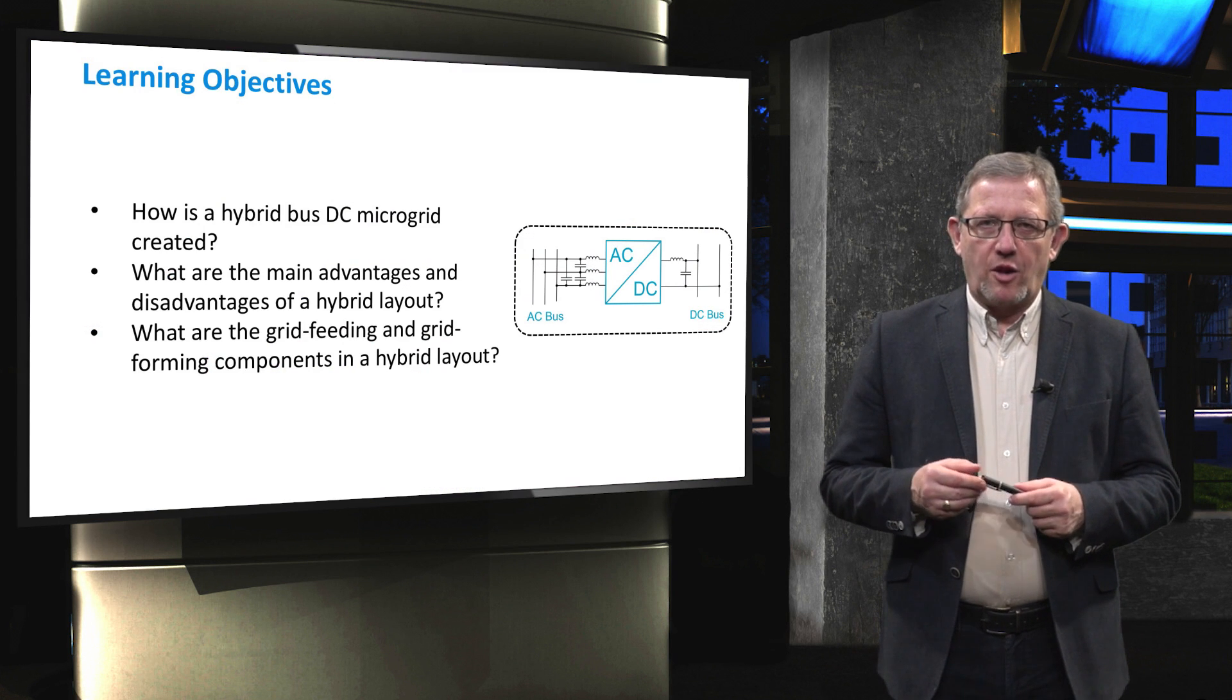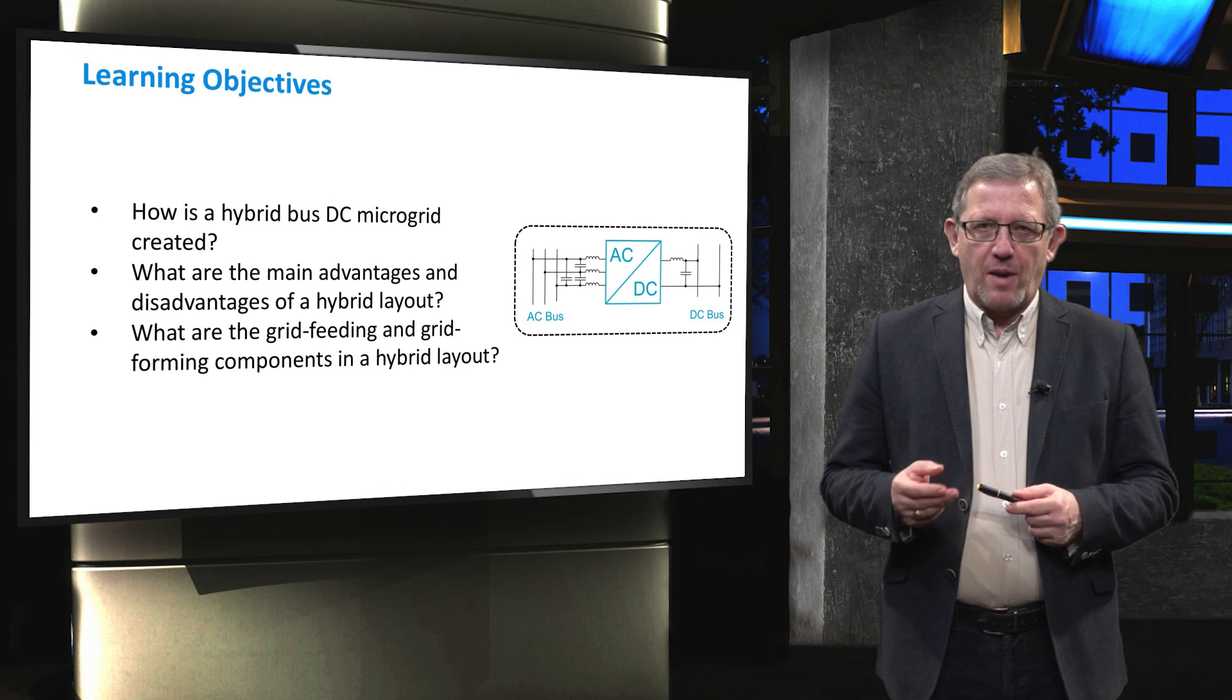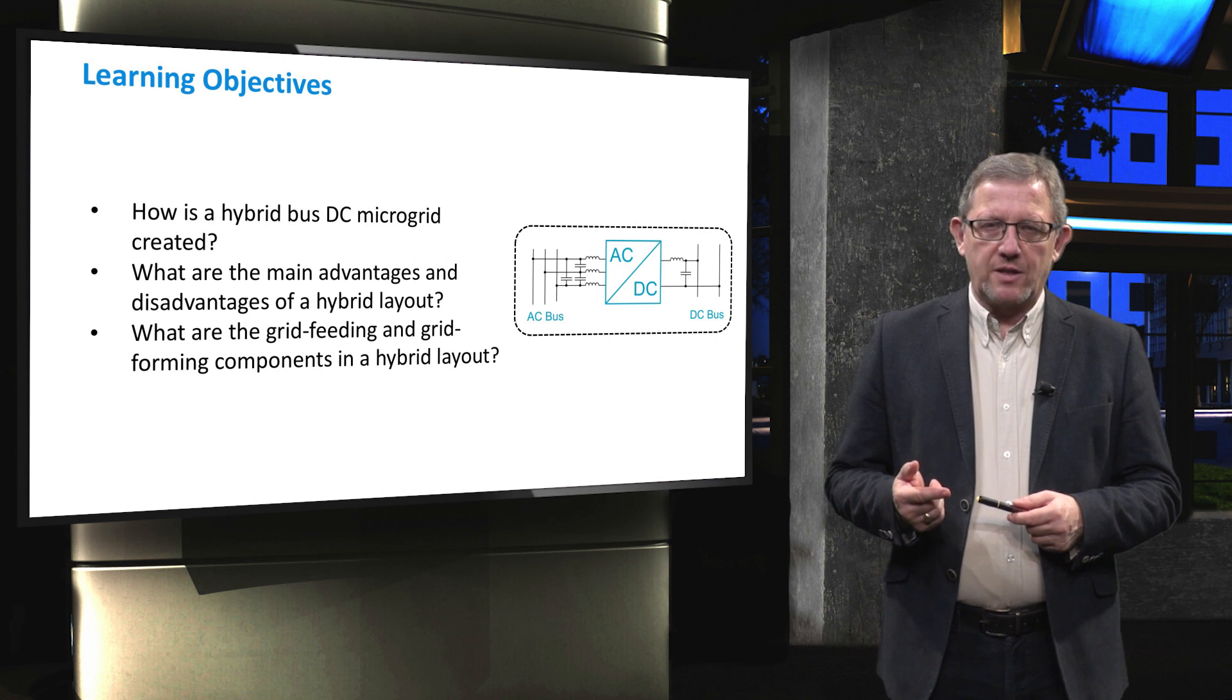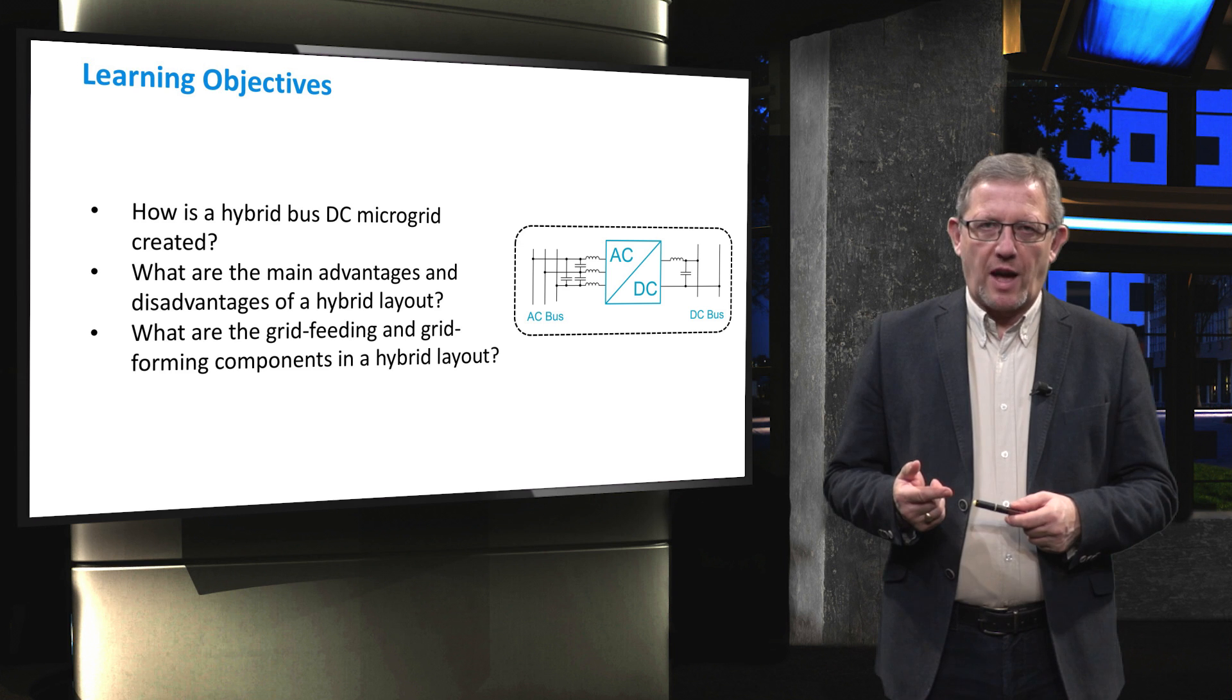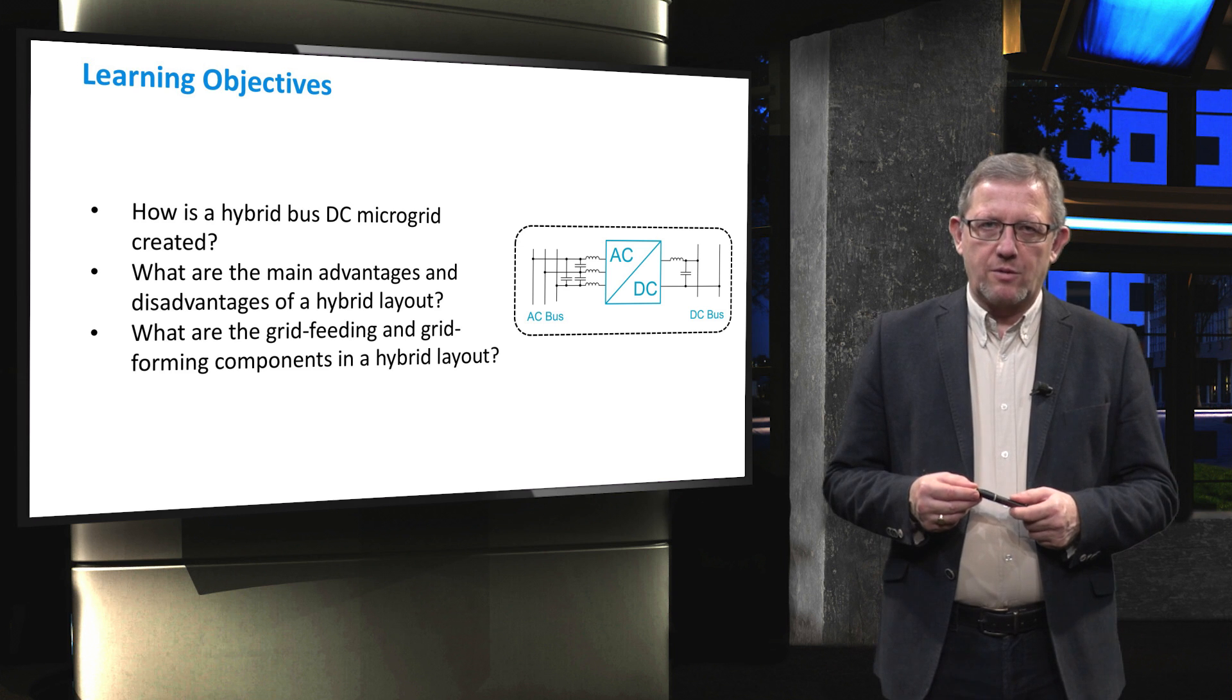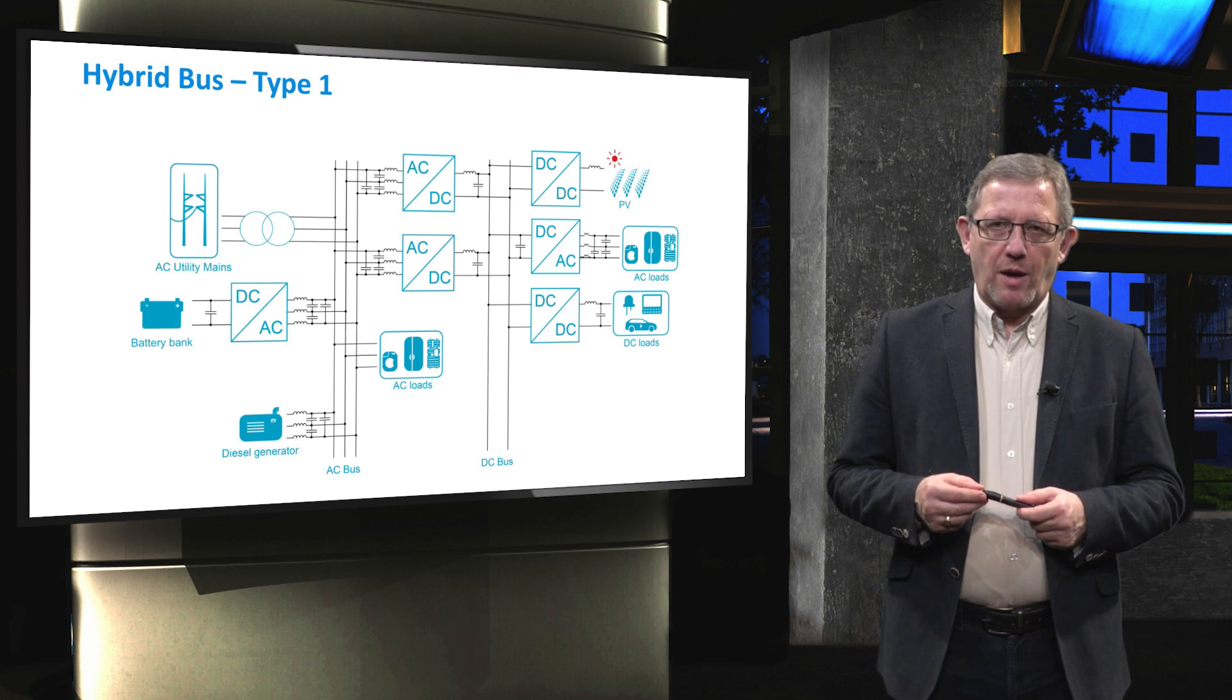The main learning objectives fall under three main questions. First, how a hybrid bus DC microgrid is created. Second, what are the main advantages and disadvantages of a hybrid layout. And third, what are the grid feeding and grid forming components in a hybrid layout.